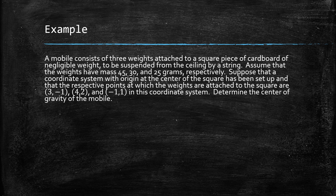Let's use that for an example. Suppose we have a mobile consisting of three weights attached to a square piece of cardboard of negligible weight, to be suspended from the ceiling by a string. The weights have masses 45, 30, and 25 grams respectively. A coordinate system with origin at the center of the square has been set up, and the weights are attached at the points (3, -1), (4, 2), and (-1, 1). Determine the center of gravity of the mobile — that is, where should we place the string so that the square will be balanced?